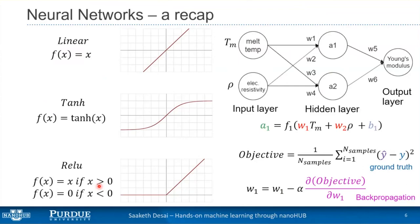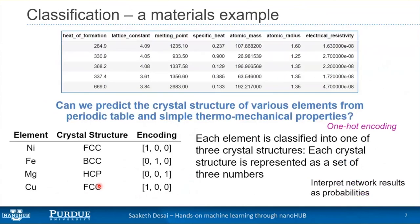Let's jump into classification. Last time we looked at how to predict the Young's modulus of a material given atomic data — a table with lattice constants, melting points, atomic radius, etc. For classification, we will ask a similar question: can we predict the crystal structure of various elements using the same information, like atomic mass or melting points? The inputs to our model are the same atomic information as last time — heat of formation, lattice constants, etc. The output should now be a crystal structure.